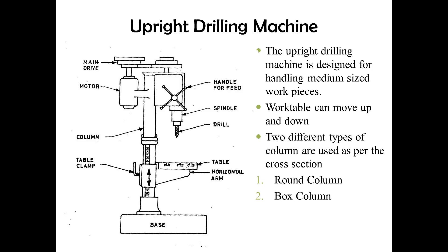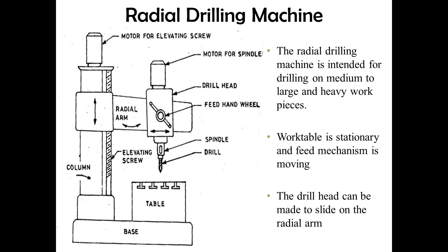The second type is the upright drilling machine. You can observe the slight difference from the previous type. The radial arm drilling machine and the sensitive drilling machine are the main topics in our syllabus. The upright drilling machine is designed for medium-sized workpieces, whereas the sensitive drilling machine is used for light duty workpieces. The upright drilling machine may have two types of columns: round or box type.